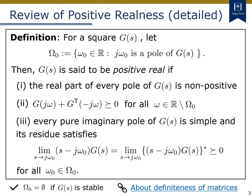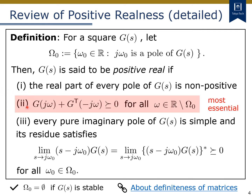In this slide, I introduce a detailed version of the definition of positive realness. First, we define the set of poles of G(s) on the imaginary axis by omega_0. Please note that omega_0 is empty if G is stable. Then, G is said to be positive real if these three conditions are satisfied. The first one corresponds to the stability of G, but we allow the existence of pure imaginary poles. The second one is the most essential condition that represents the positive realness of G. For SISO systems, this corresponds to the fact that the Nyquist curve of G is confined into the right half plane, as seen in the previous lectures.